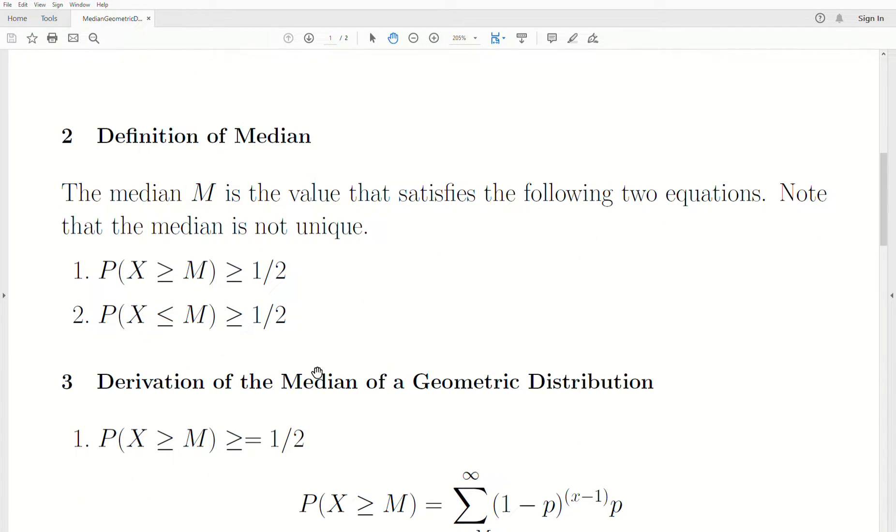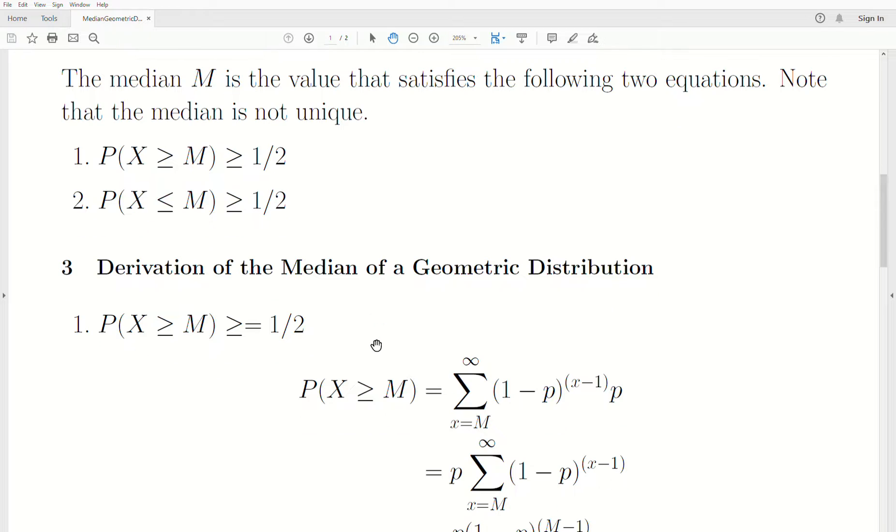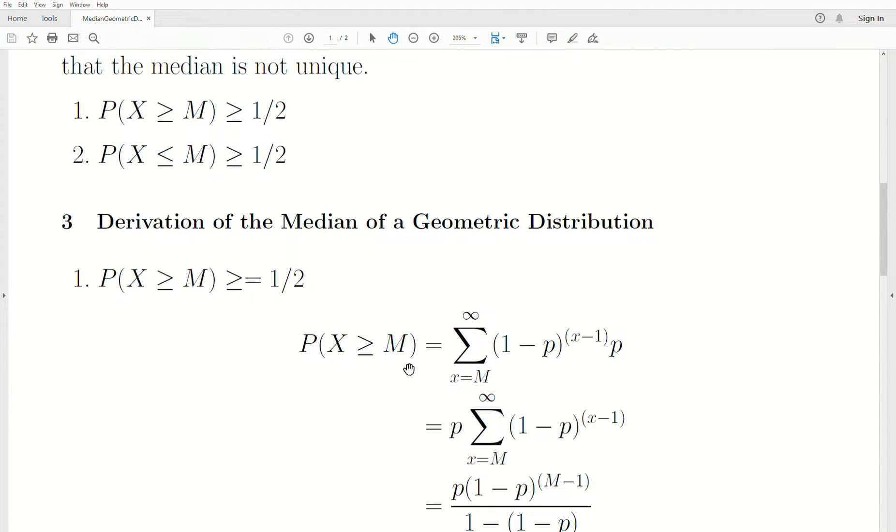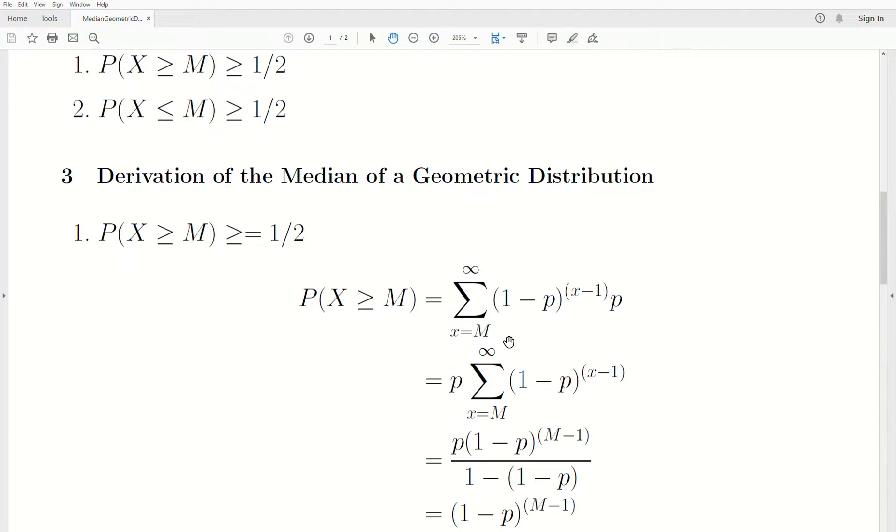So let's apply these definitions to the geometric distribution. First, definition one. We'll look at the probability that X is greater than or equal to M, which is the sum of the density from M to infinity.